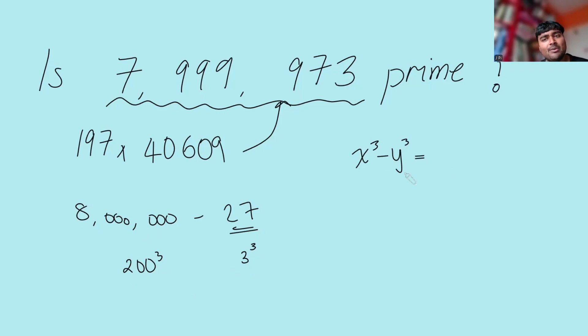So x cubed minus y cubed, well we can just use the factorization for this: this is (x minus y) times (x squared plus xy plus y squared). This is very easy to verify just by expanding, but it's just the difference of two cubes formula.